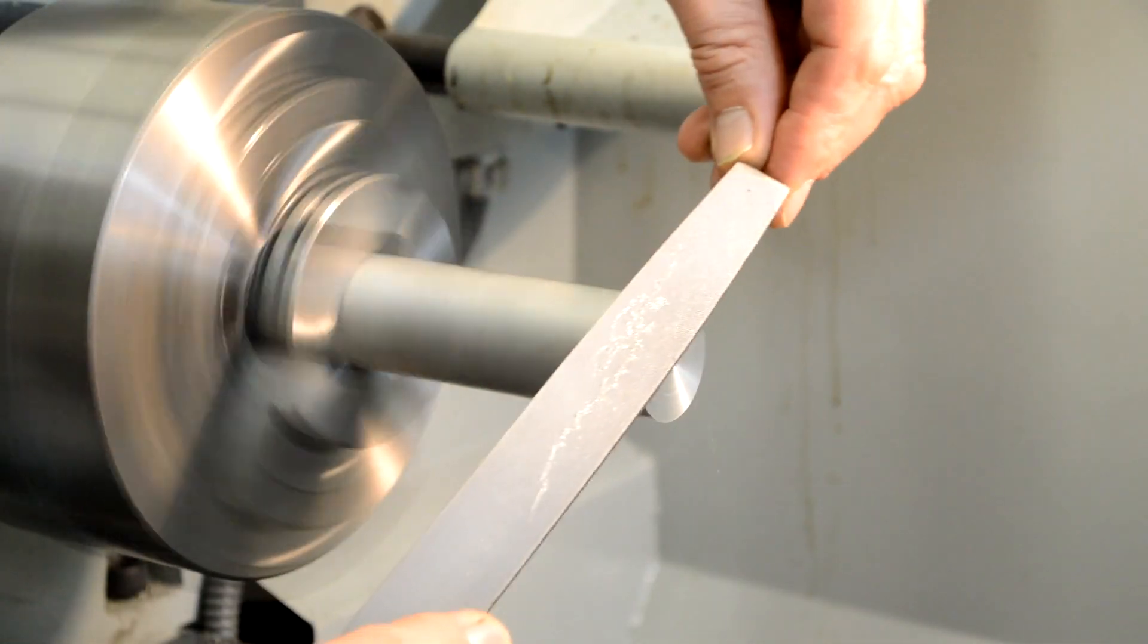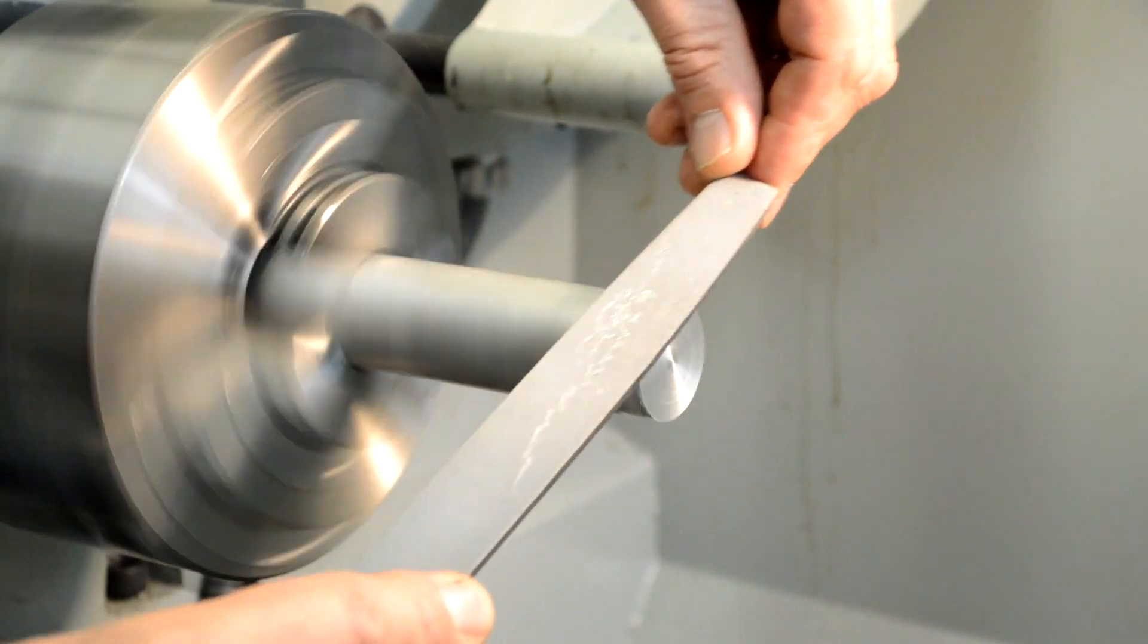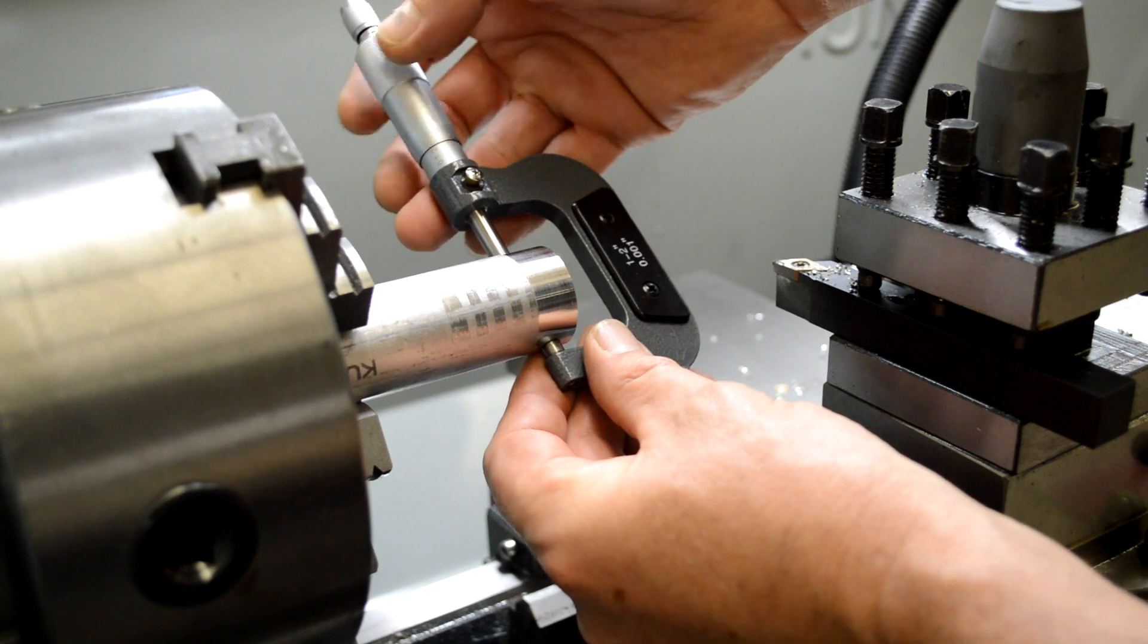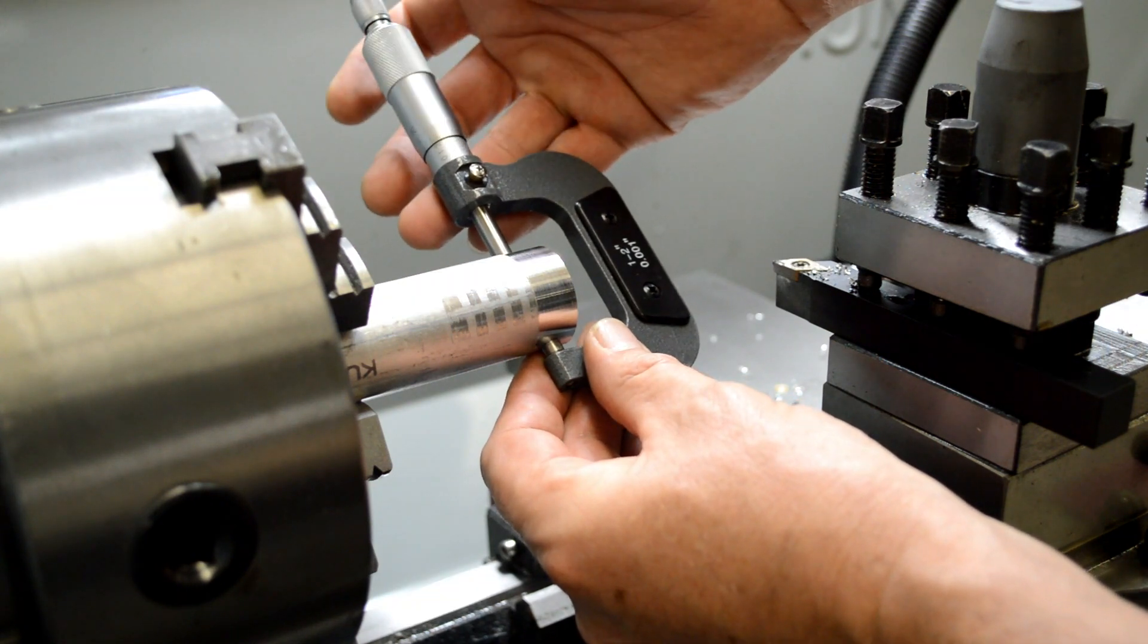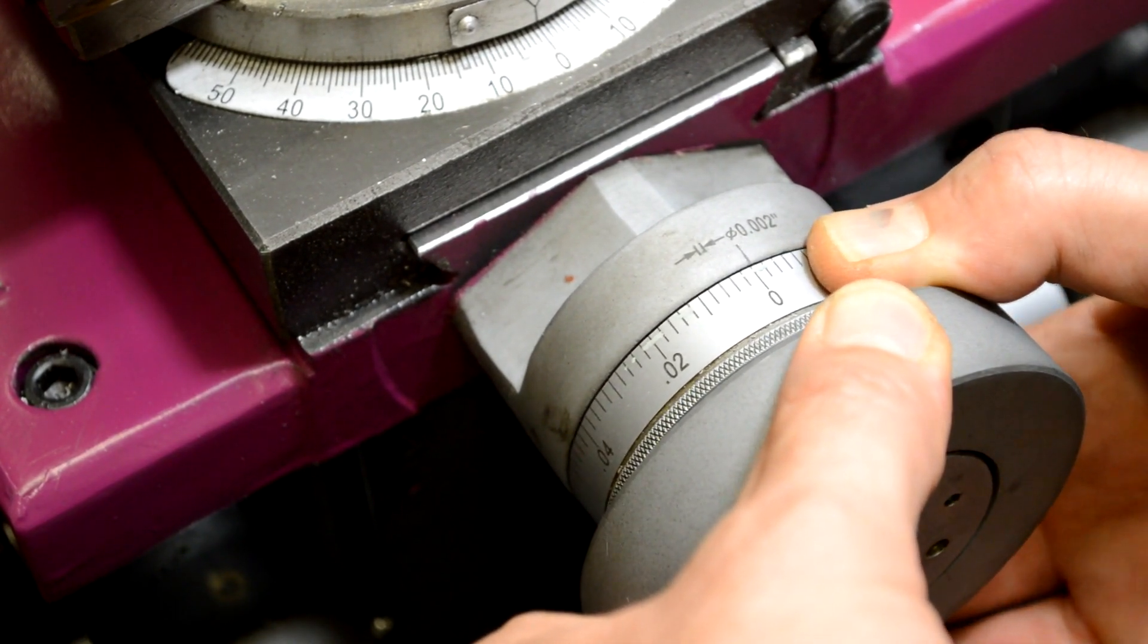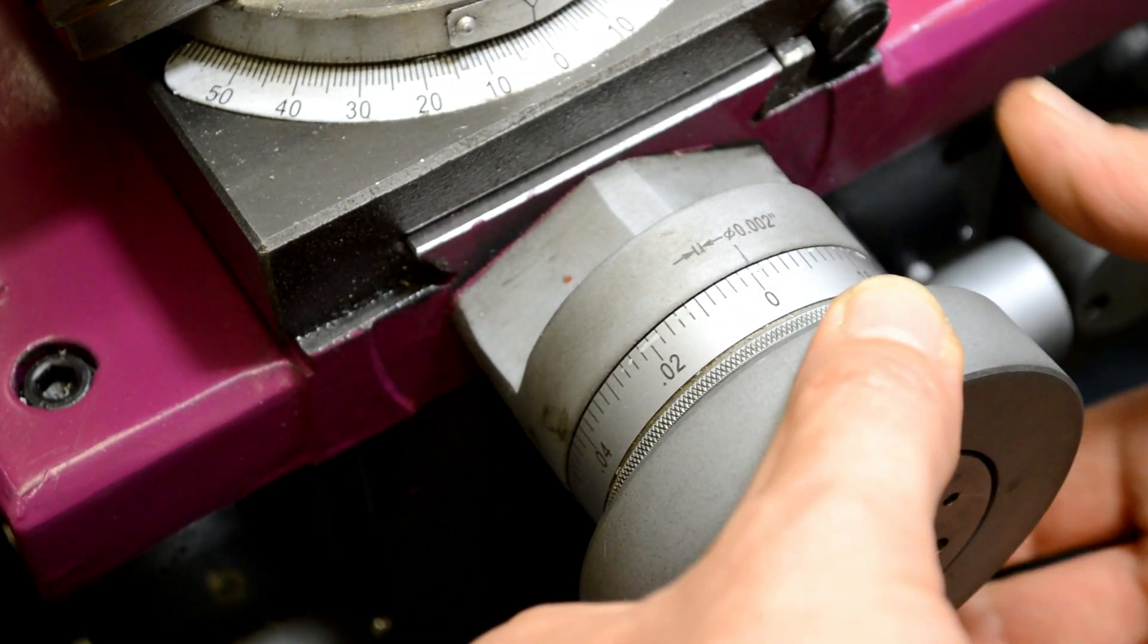And before I measure, I'm going to want to deburr the edge of the part. Now I can take a measurement and know exactly what the diameter is. And I can reset the hand wheel to zero and they'll both match now. And that's a witness pass.